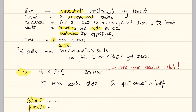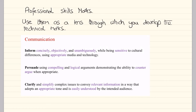We should also start by looking at the professional skills marks. Here they are for communication. There's detailed help available on the ACCA website, but briefly we need to inform, persuade, and clarify. Try and remember those headings. Use the professional skills marks as the lens through which we develop the technical marks — so when thinking about our answer to gain technical marks, ask: are we informing, persuading, and clarifying what we're saying? Are we simplifying things down to make them less complex?